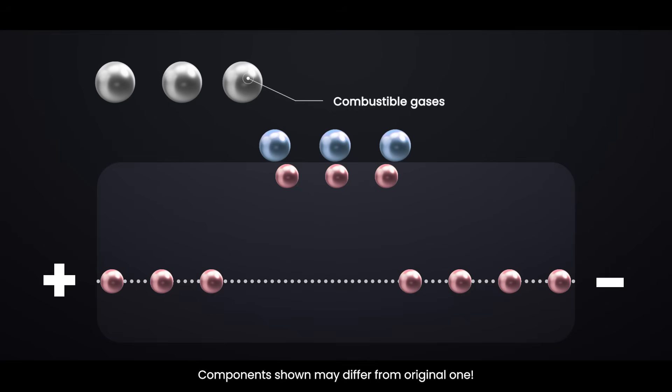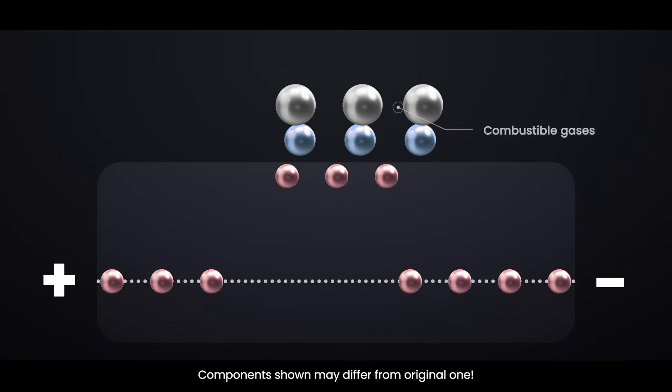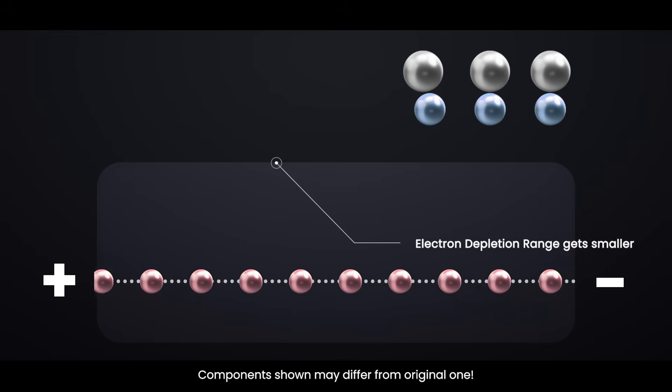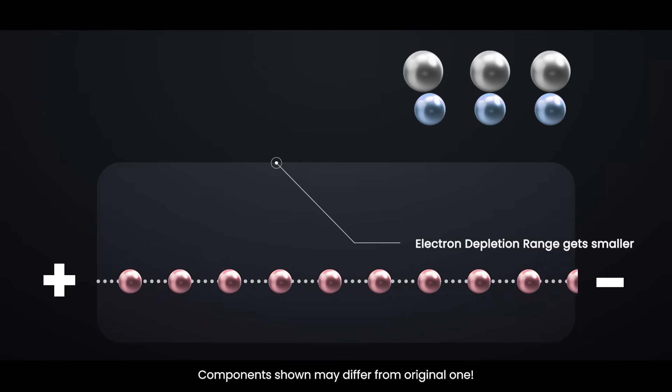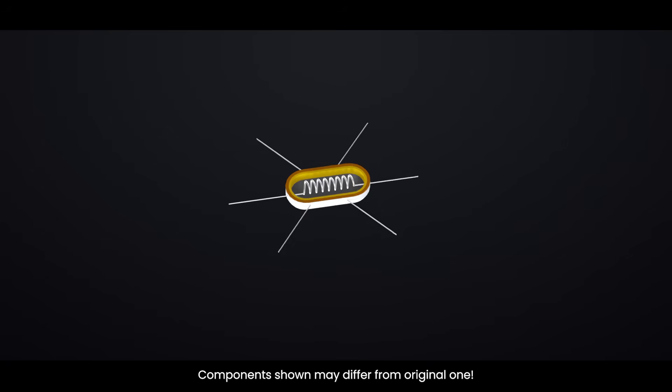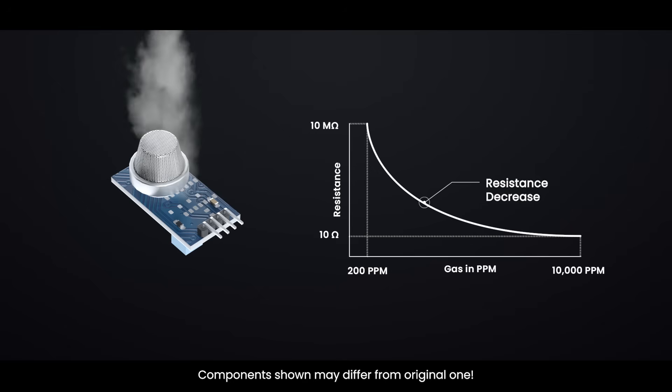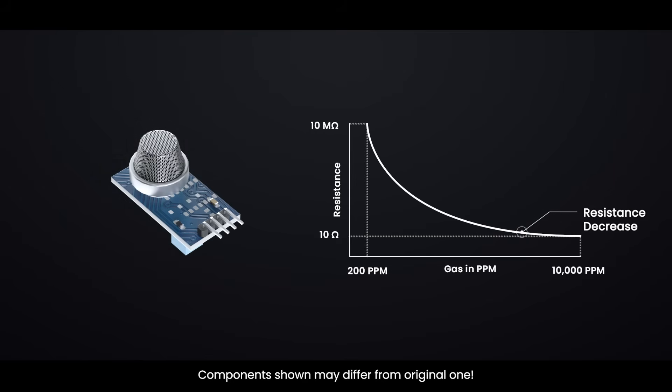When combustible gases enter the sensor, they react with the oxygen molecules that are stuck to the tin dioxide surface. This chemical reaction releases the electrons that were being held by the oxygen. As these electrons return to the tin dioxide, the electron depletion region gets smaller. This reduces the resistance, allowing electricity to flow much more easily through the sensor. The MQ2 sensor works by detecting these changes in electrical resistance. The more flammable gas there is, the more oxygen molecules react, and the more the resistance decreases. This makes it easier for microcontrollers connected to the sensor to detect both the presence and the concentration of gas in the air.